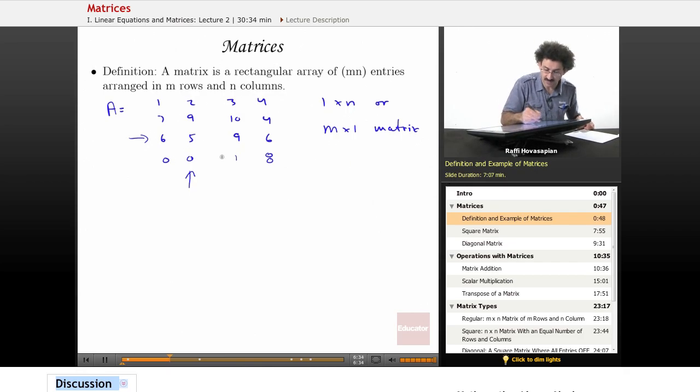So a one by n would be something like this. If I took, let's say the fourth row, I would have [0, 0, 1, 8]. This is one by n. In this particular case, one by four.